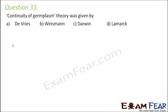Question number 33: the continuity of germplasm theory was given by whom? This theory told that only the traits contained in the germ cells get inherited. Nothing in the somatoplasm or the protoplasm of somatic cells gets inherited — they do not get passed on. This was given by Weismann, and this theory showed that the Lamarckian theory of inheritance, which said that acquired traits get inherited, is not correct.